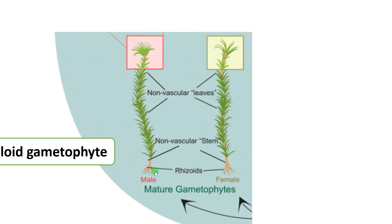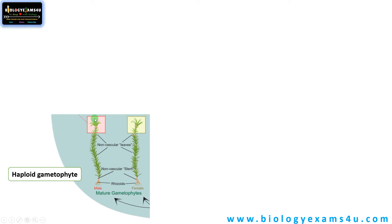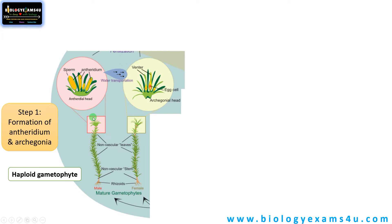There is a male gametophyte that will form the male reproductive structure and the female gametophyte that forms the female reproductive structure. Step one is the formation of anthridium and archegonium. The male gametophyte forms the anthridium — the male reproductive structure or male gametangium — and the female gametophyte forms the archegonium, or female gametangium.